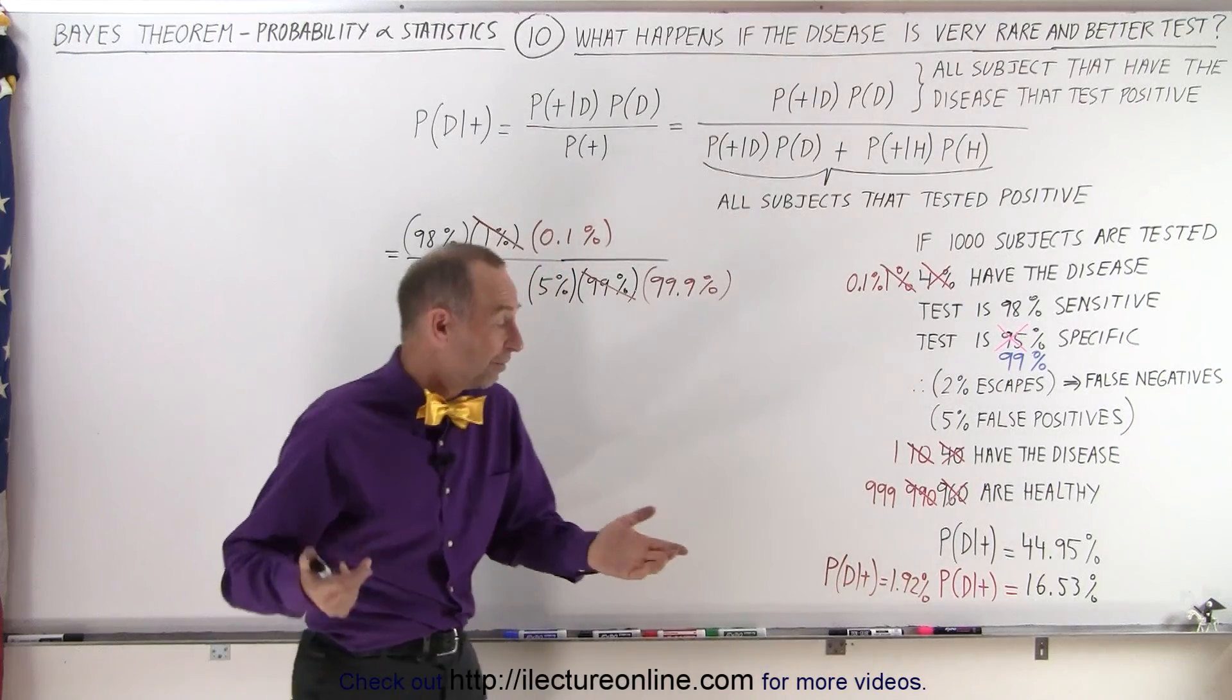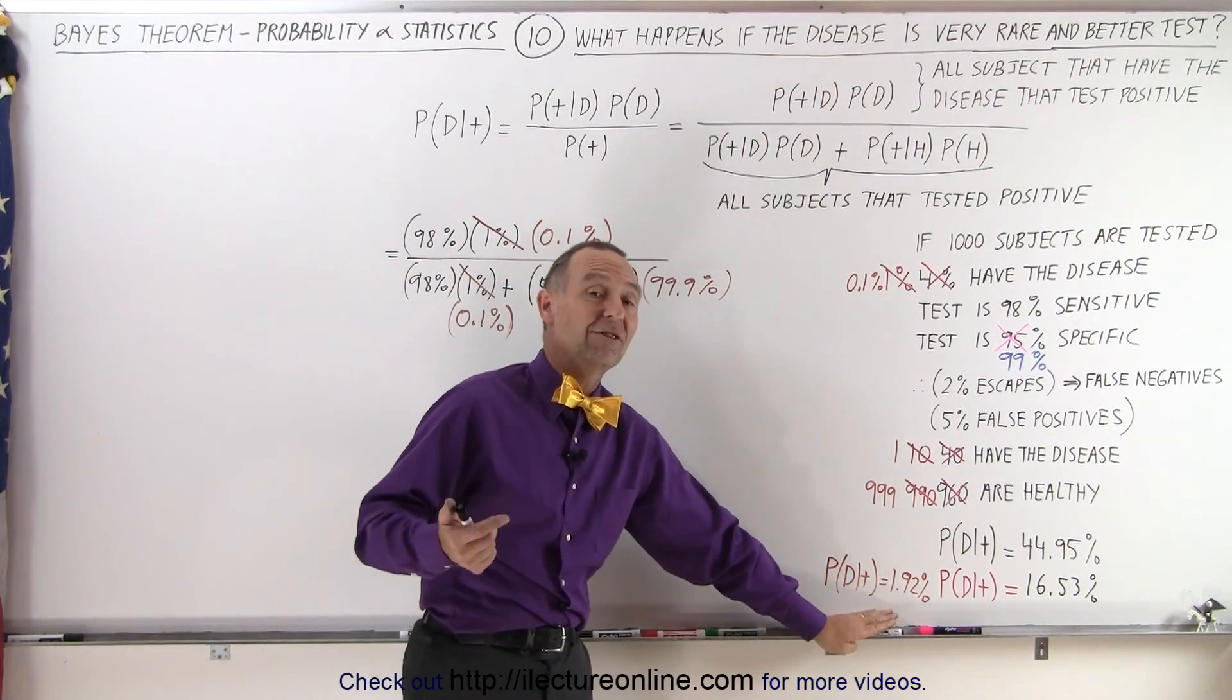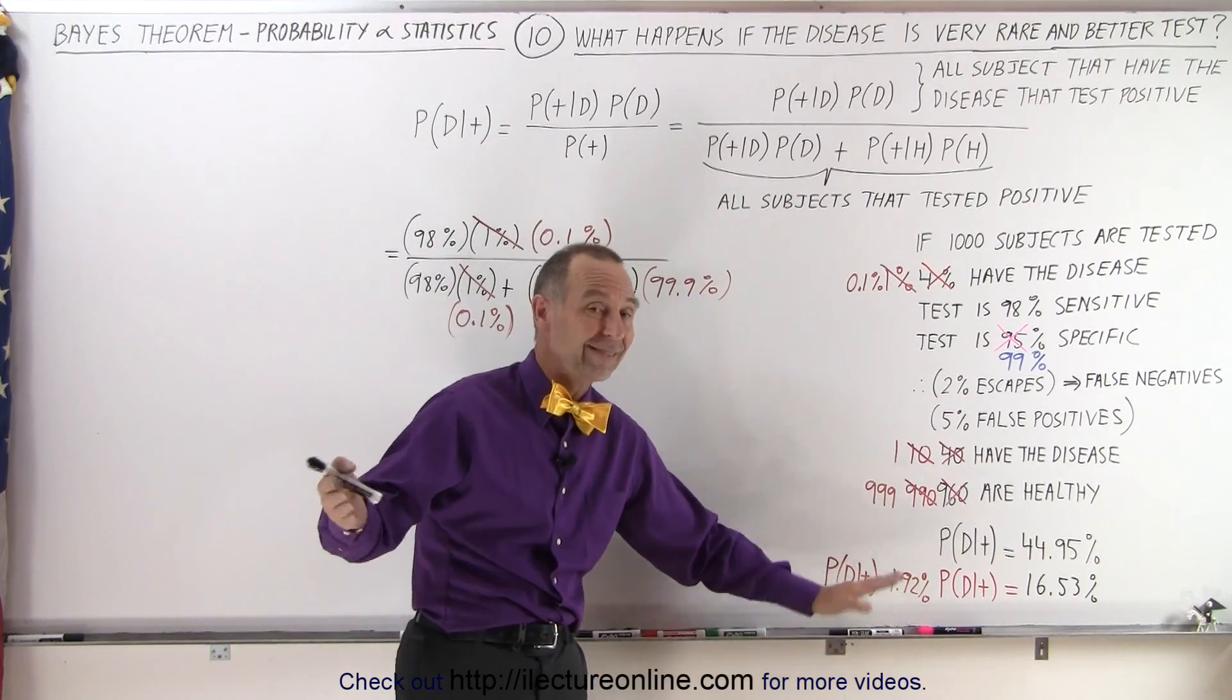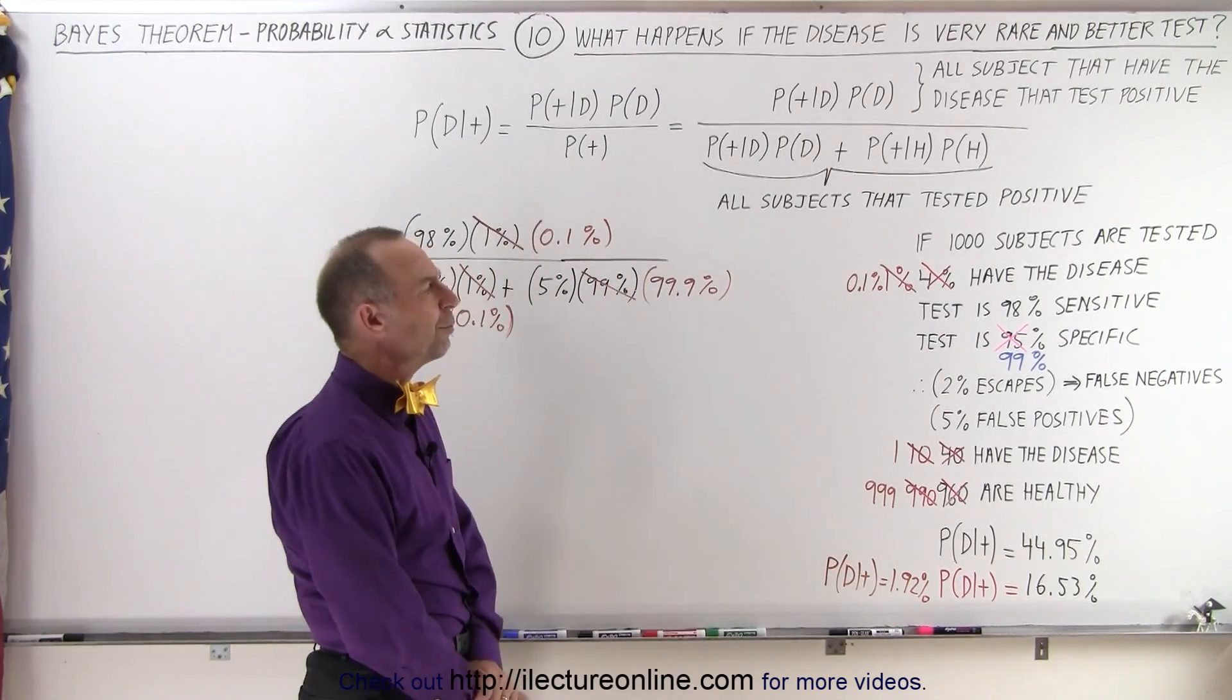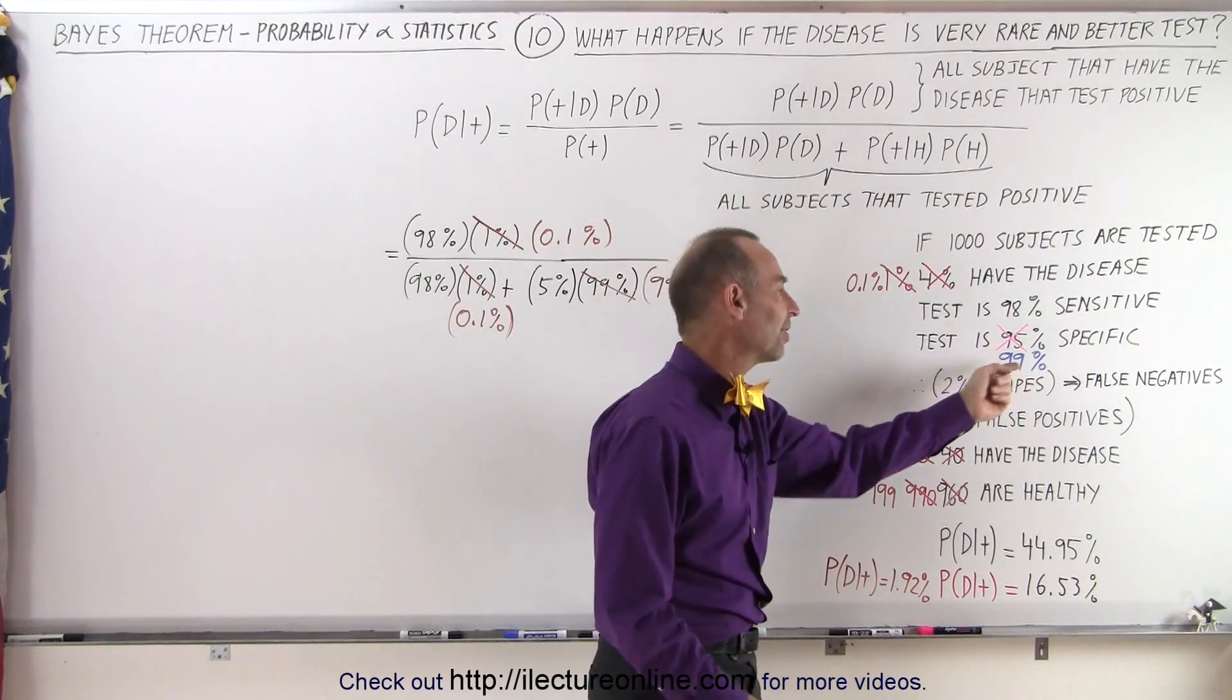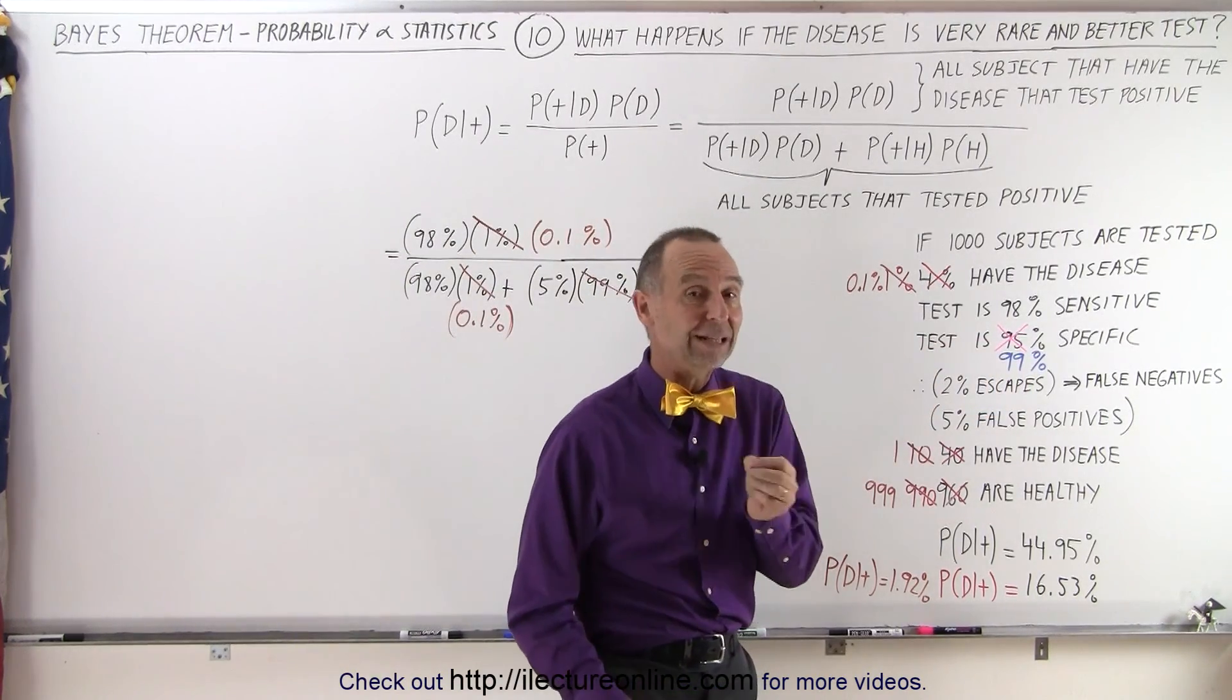In other words, you test positive, the probability that they actually have the disease or the condition you're testing for is almost zero. That's not a good test. So what if we could make the test better? Let's increase the specificity of the test to 99 percent instead of 95 percent.